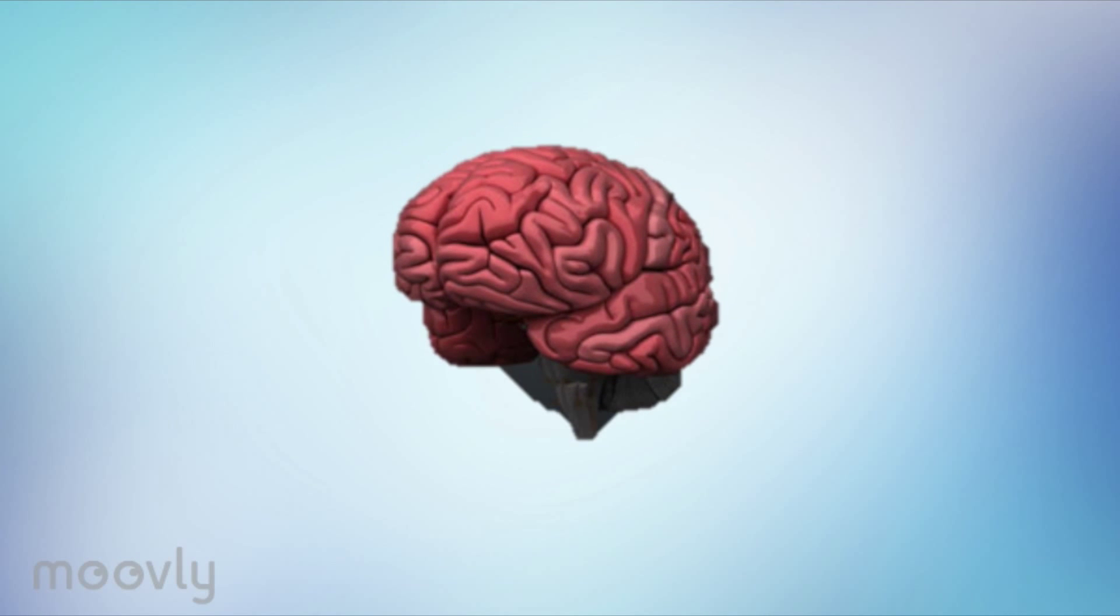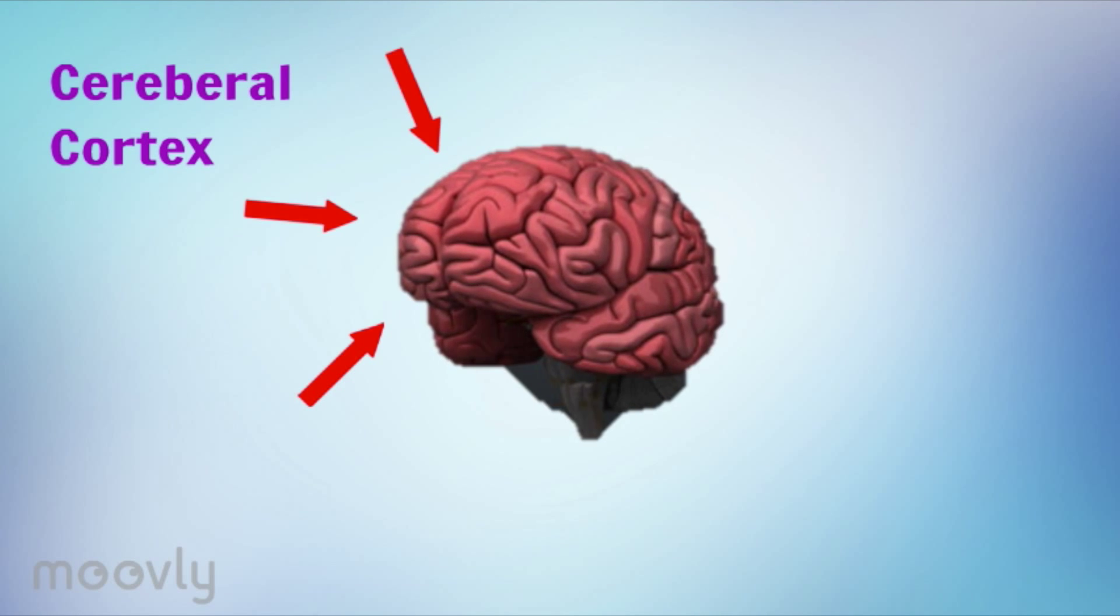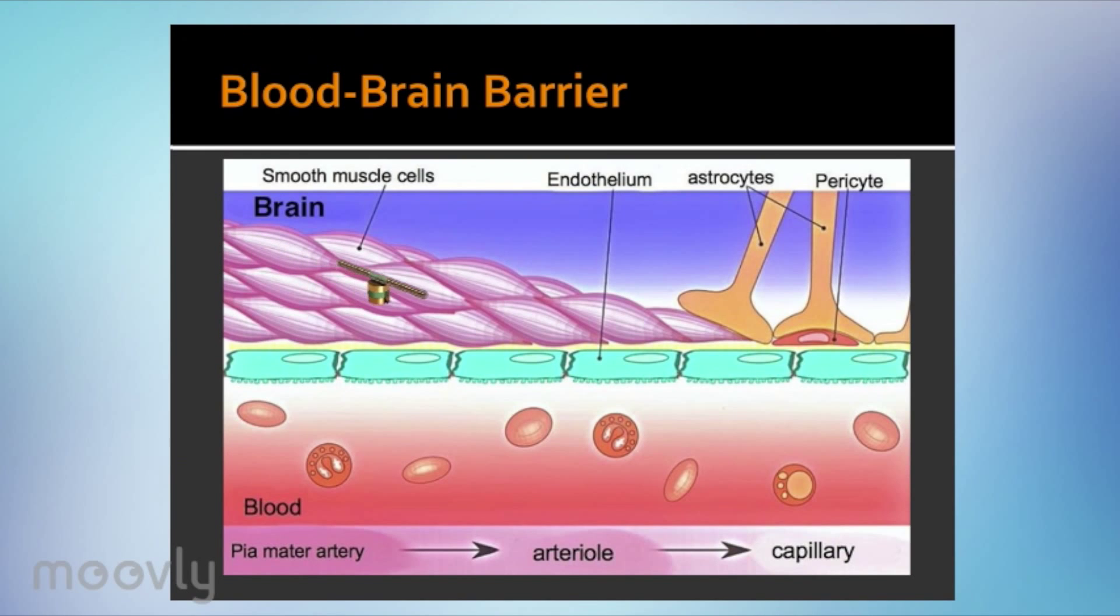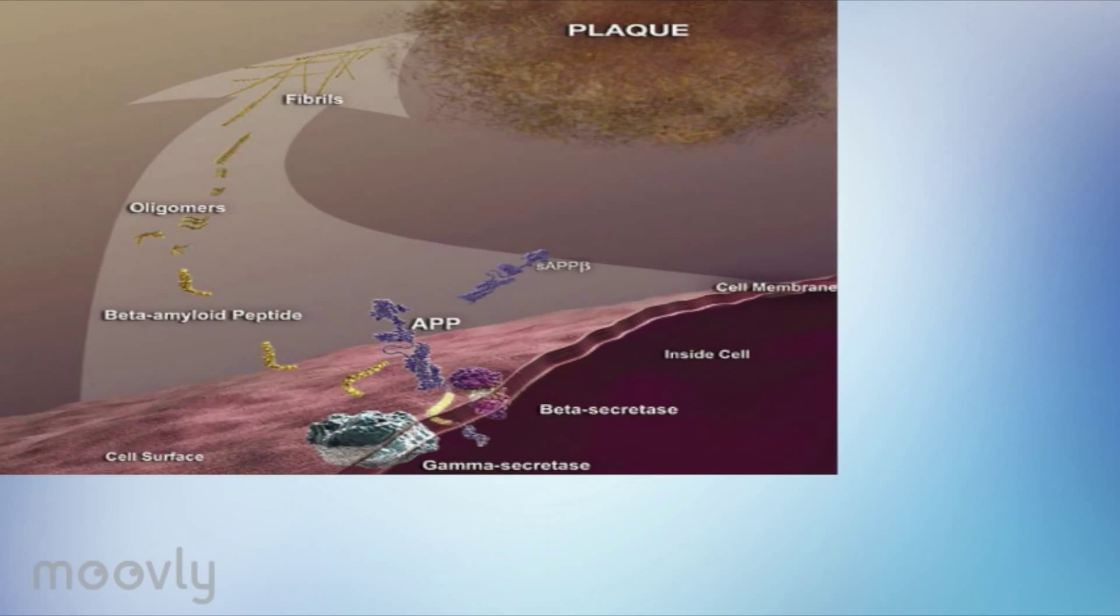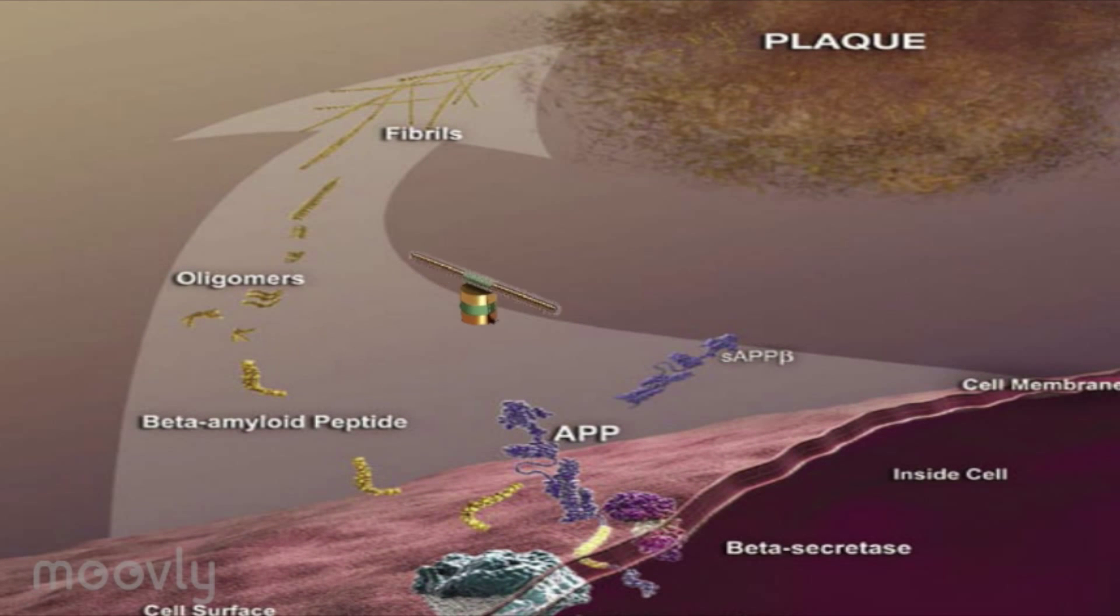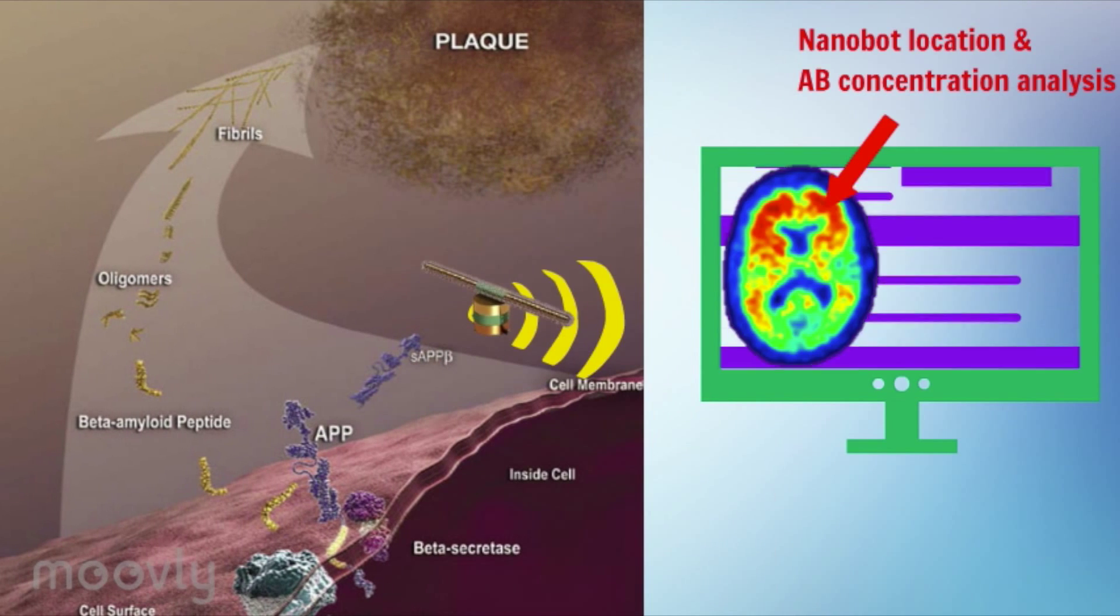Upon arriving at the cortex, scavengers are able to permeabilize the blood-brain barrier, or BBB, via the activation of a specific radiofrequency EMF. Having reached their target location, scavengers take a preliminary scanning of plaque concentration and transfer both their location and data to an external database.